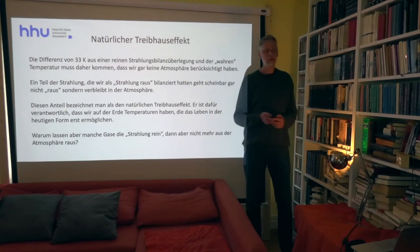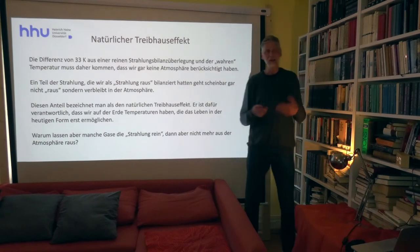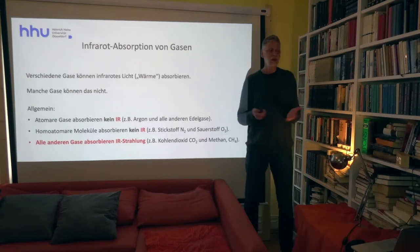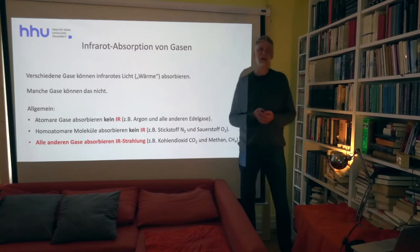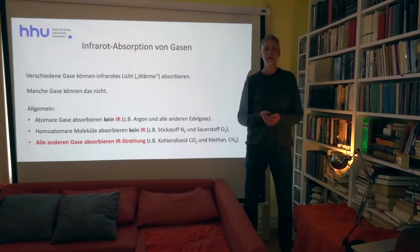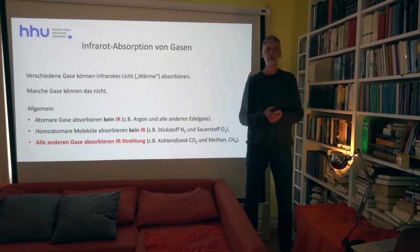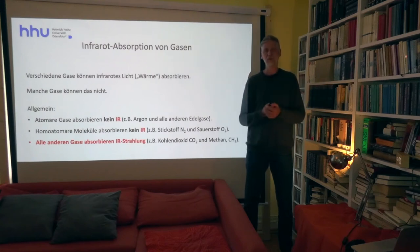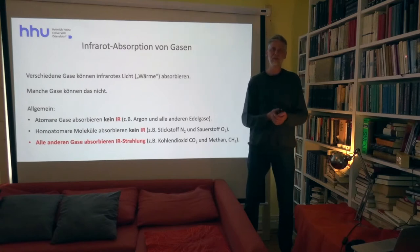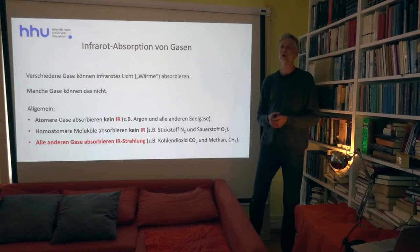Warum lassen manche Gase die Strahlung rein, aber dann nicht mehr raus? Dazu müssen wir uns die Infrarotabsorption von Gasen anschauen. Es gibt Gase, die können Infrarotstrahlung absorbieren und wieder emittieren, und andere, die können das nicht. Was dafür notwendig ist: Während einer Schwingung des Moleküls muss sich das Dipolmoment ändern. Das Dipolmoment kommt durch eine ungleichmäßige Ladungsverteilung des Moleküls zustande. Wenn es einen positiven und einen negativen Ladungsschwerpunkt gibt, sprechen wir von einem Dipol. Wenn sich während einer Schwingung dieser Dipol ändert, kann das Molekül Infrarotstrahlung absorbieren.